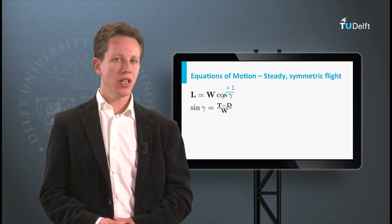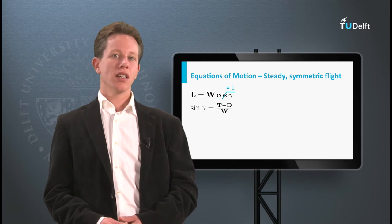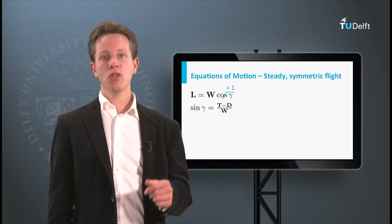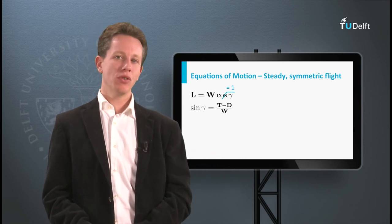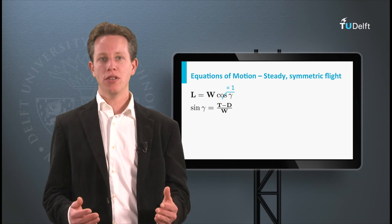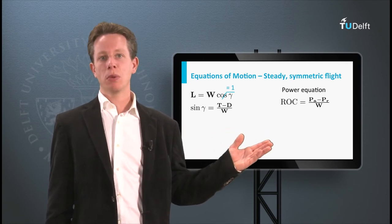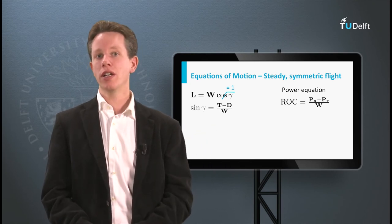This second equation can be used to calculate climb angle if thrust and drag are known. If we are on the other hand interested to calculate the climb rate, we should multiply this second equation with the airspeed. When you do that we obtain the power equation. This equation has rate of climb as one of the variables, but in fact it is derived from the second equation of motion.